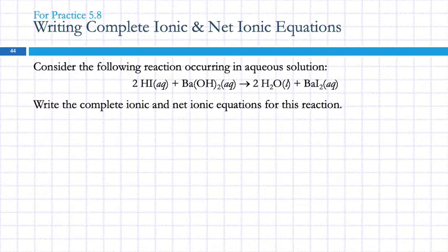Let's do an example. Consider the following reaction occurring in aqueous solution: 2HI(aq) + Ba(OH)2(aq) → 2H2O(l) + BaI2(aq). Write the complete ionic and net ionic equations for this reaction. So, we're going to look and see aqueous, aqueous. That one's a liquid. And this one's aqueous. So, this water is not going to get split into ions, but probably going to split up everything else.